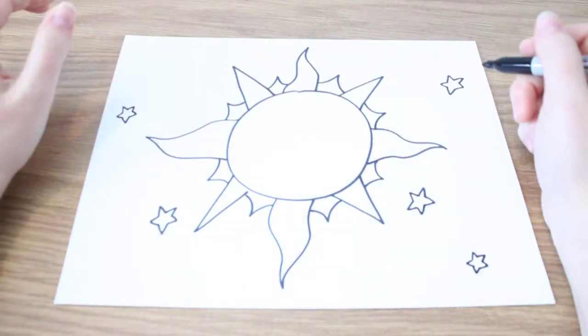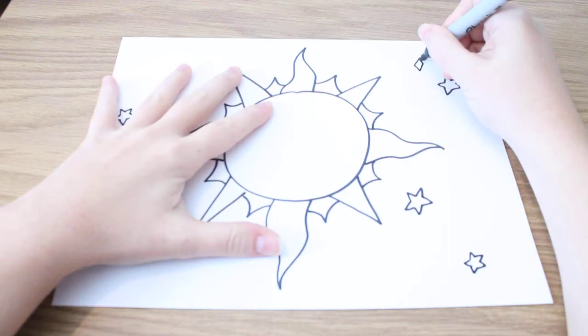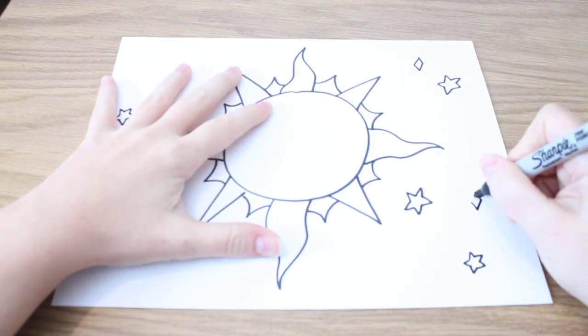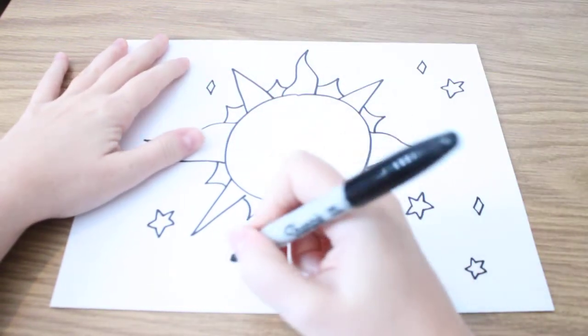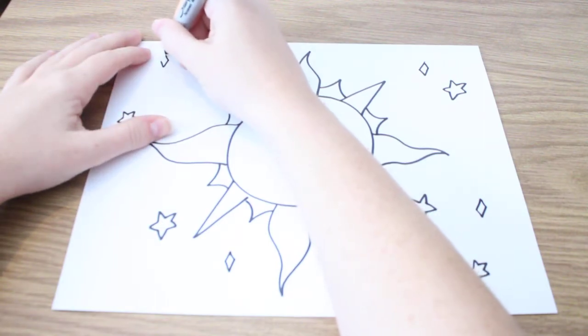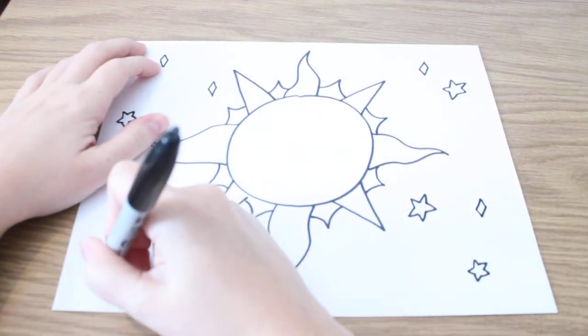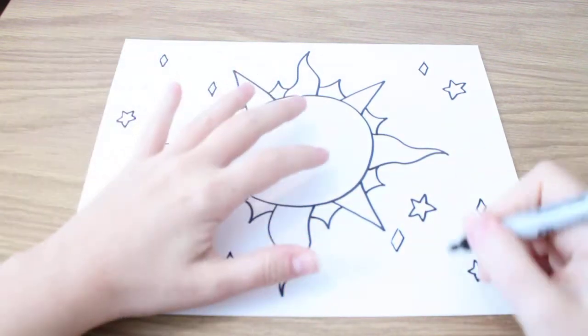Okay, so now we're going to make some little diamond shapes for stars too. We want a variety, I'm trying to change the size, have some bigger and some smaller.